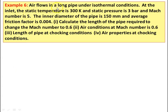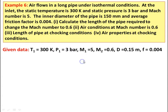Example number 6: air flows in a long pipe under isothermal conditions. At the inlet, static temperature is 300 K, static pressure is 3 bar, Mach number is 0.5. The inner diameter of the pipe is 150 millimeter and average friction factor is 0.004. Calculate: the length of pipe required to change the Mach number to 0.6, air conditions at M2 = 0.6, length at choking condition, and air properties at choking condition. Given: T1 = 300 K, P1 = 3 bar, M1 = 0.5, M2 = 0.6, D = 0.15 m, F = 0.004.